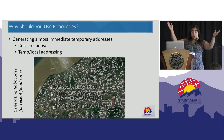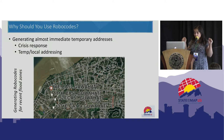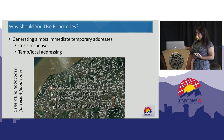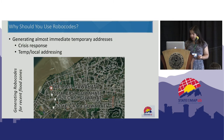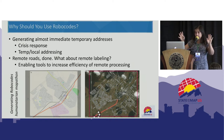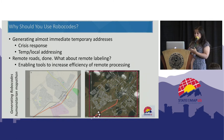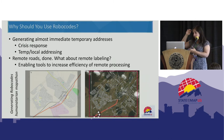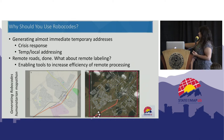So why should you use Robocodes? Generating almost immediate temporary addresses is one of the key use cases, useful for crisis response and temporary addressing. For example, Robocodes were generated for a recent flood zone. You can also enable remote labeling — this can be a tool to increase the efficiency of remote processing. This area was taken from OSM and Robocodes were generated for a humanitarian map. It's just export, process, and visualize — that's it.